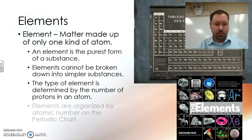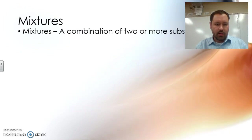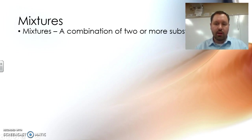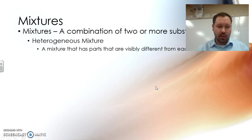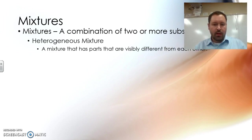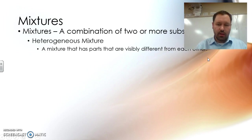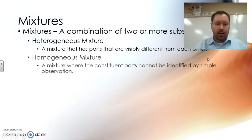So we went through all those things together. A mixture is a combination of two or more substances. There's a heterogeneous mixture — it has parts that are visibly different from another part. We also have homogeneous mixtures.